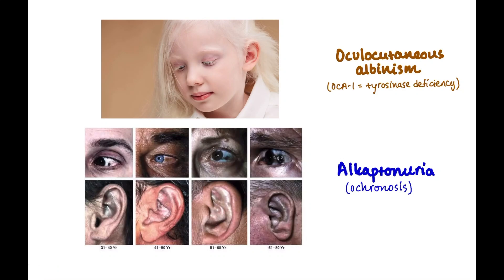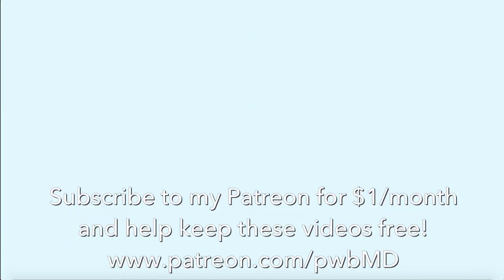Here is a picture of oculocutaneous albinism — notice the child has very fair skin, practically white hair, and very light-colored eyelashes. And this is alkaptonuria showing its natural progression: you can see blue discoloration of the sclera — not to be confused with osteogenesis imperfecta — as well as blue discoloration of the connective tissue, which gets worse over time. These patients also have very debilitating joint pain.